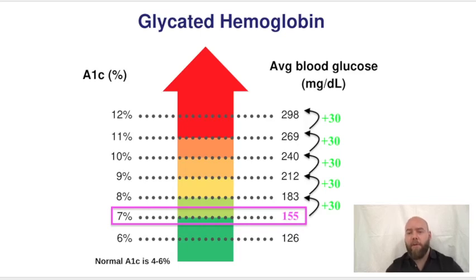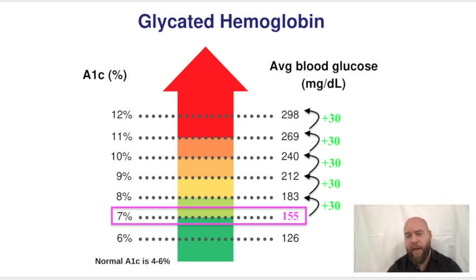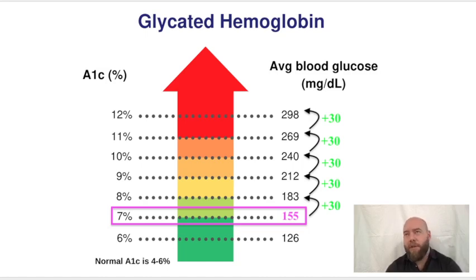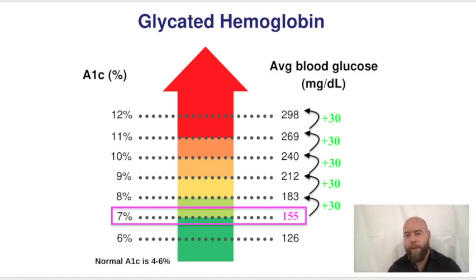Here's a tip on how to know what a patient's average blood glucose is based on their A1c level. A1c is a long-term measurement of average blood glucose because it's a measurement of red blood cells. Red blood cells live for three months.